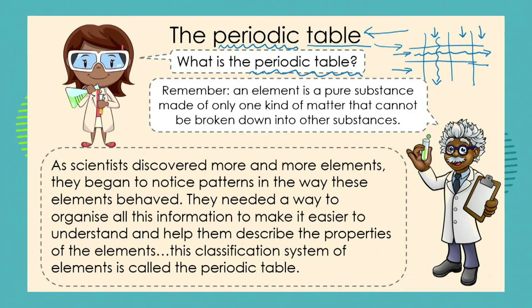Now let's remember from our lesson that we had previously: an element is a pure substance, it's only made up of one kind of matter and it cannot be broken down into other kinds of matter or into other substances. So for example oxygen is an element and so is hydrogen. But we can take oxygen and chemically combine it with hydrogen to make a new compound called water. Because water has both oxygen and hydrogen in it, it isn't an element — it is a compound.